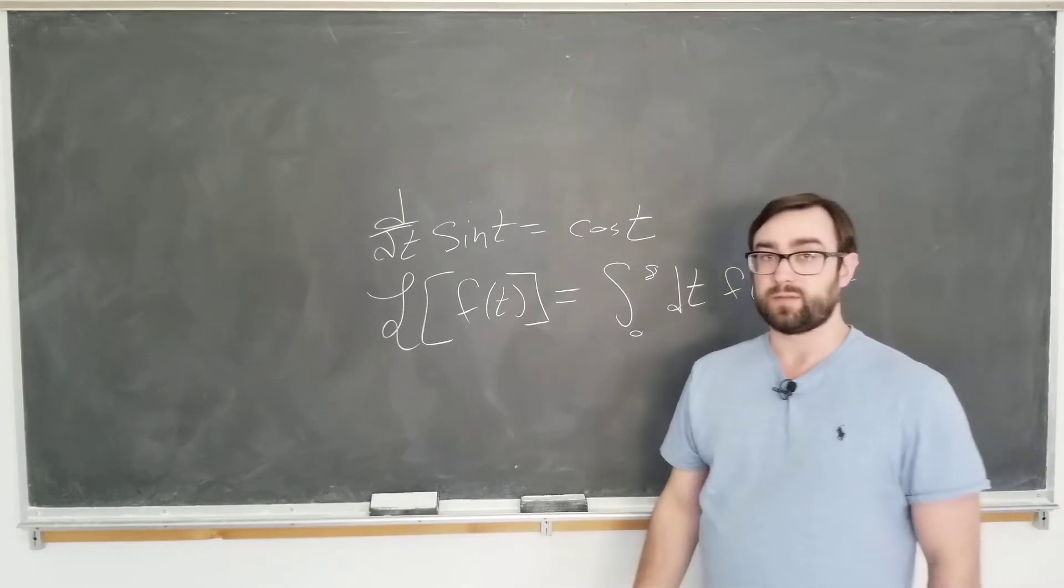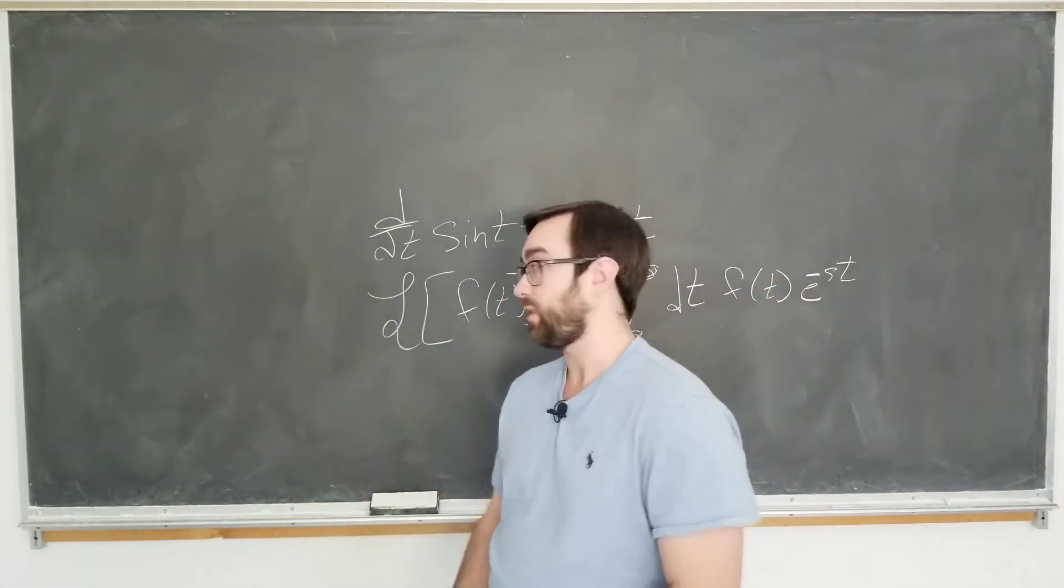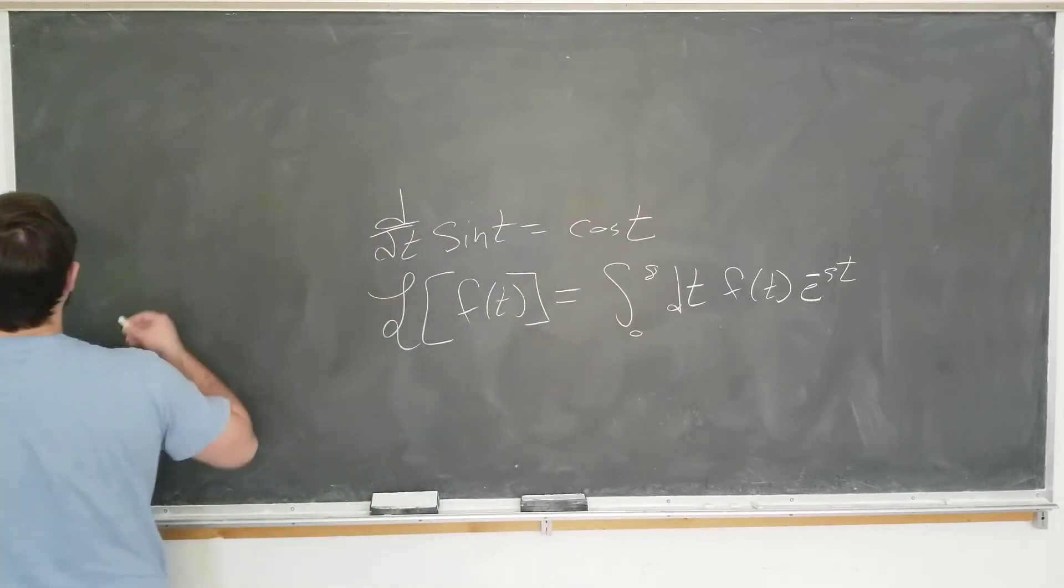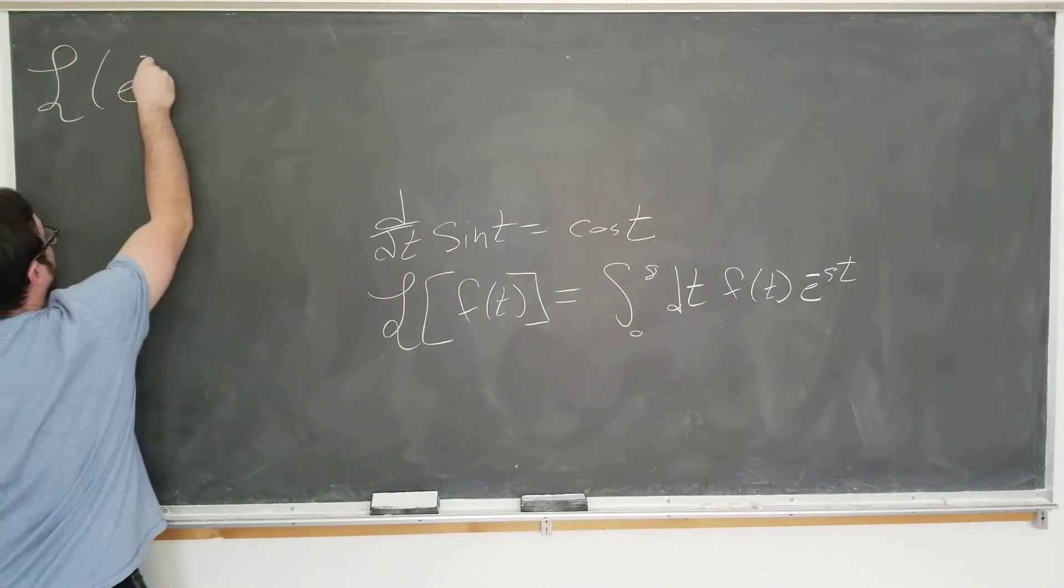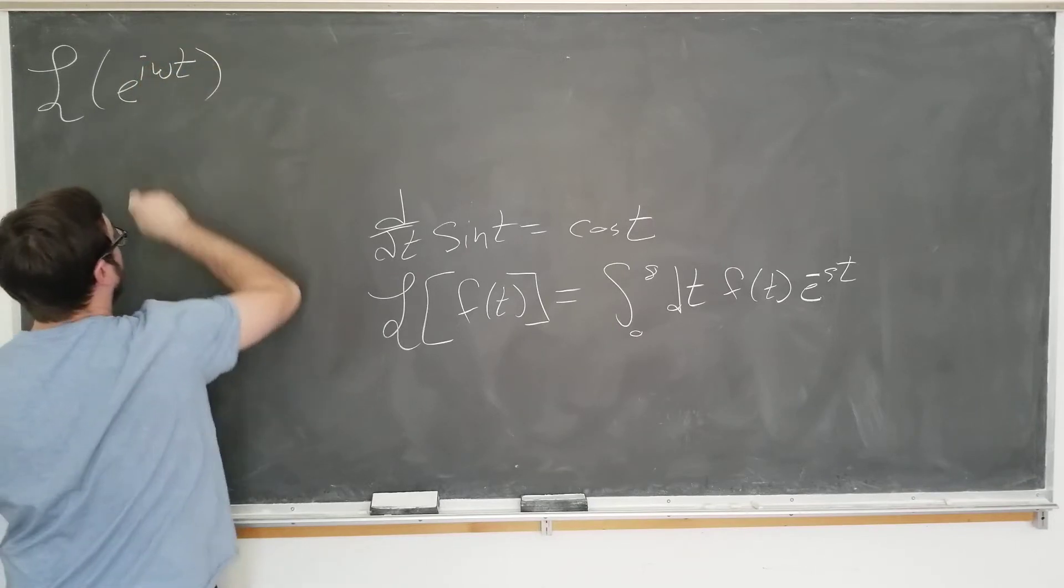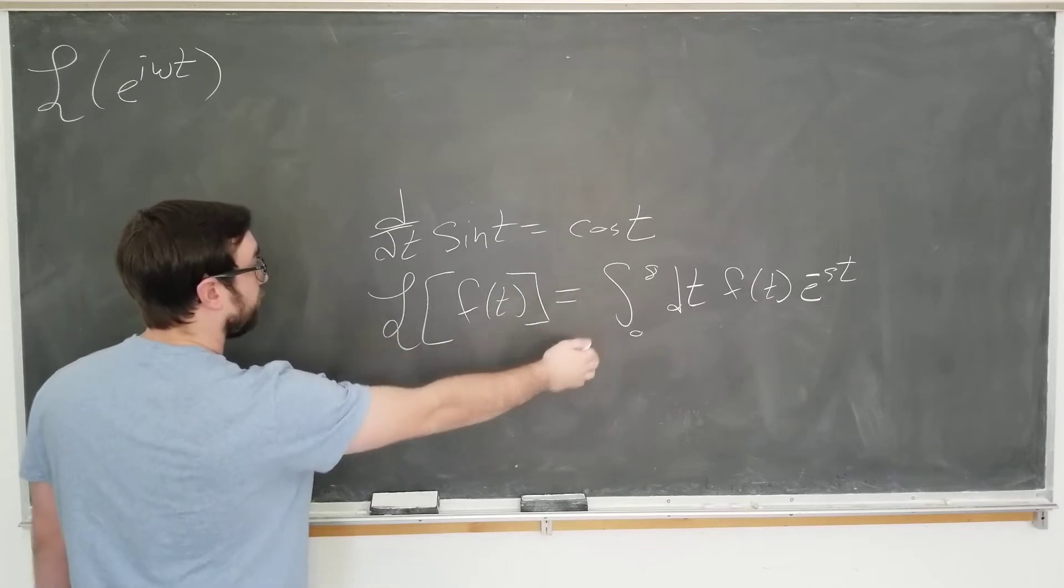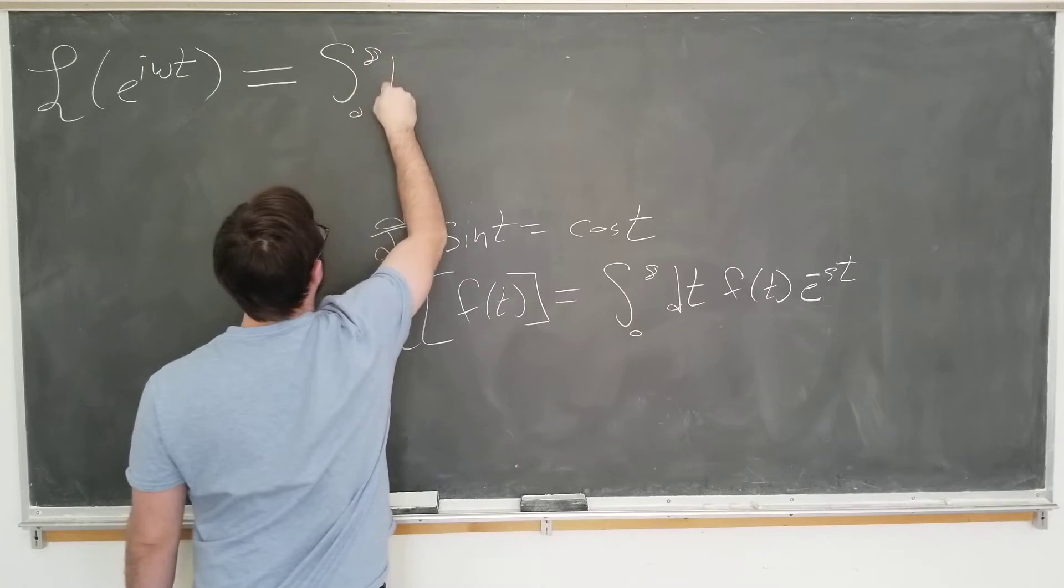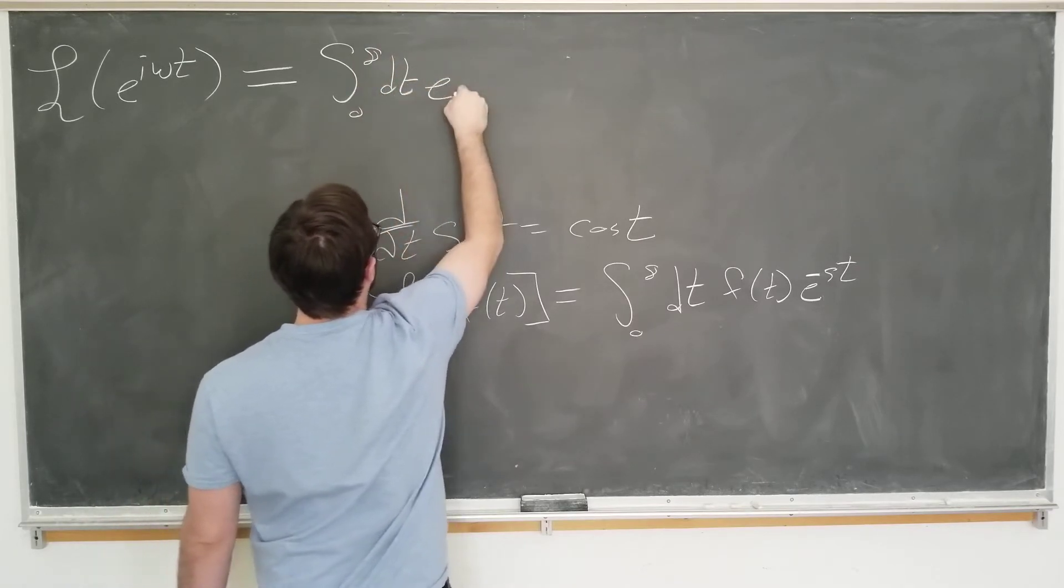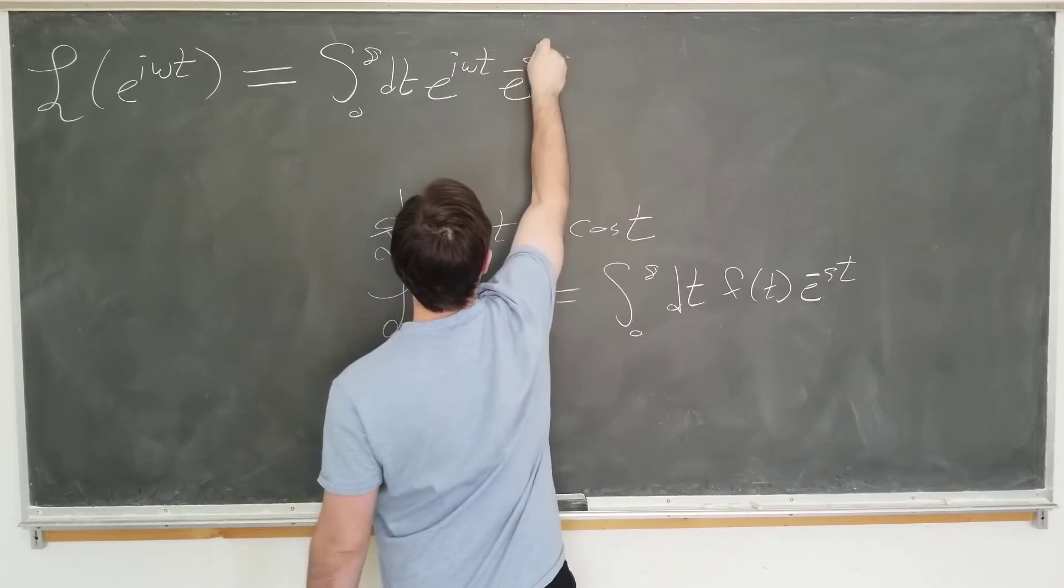And we're going to begin with the Laplace transform of the complex exponential. So we're going to look at the Laplace transform of e to the i omega t, where omega is some real number. Just plugging in the definition, it is the integral zero to infinity with respect to time of e to the i omega t times e to the minus st.